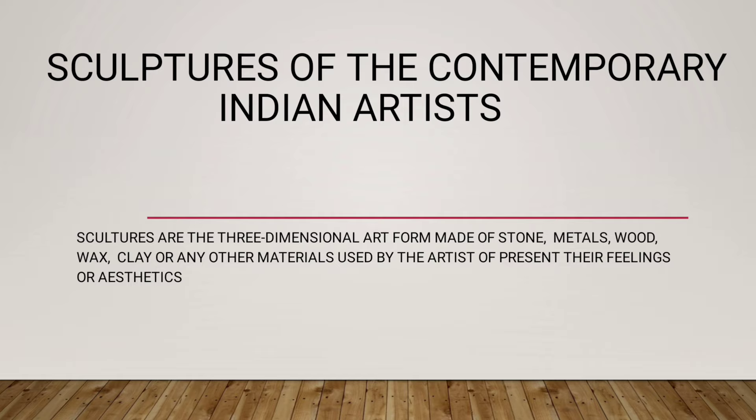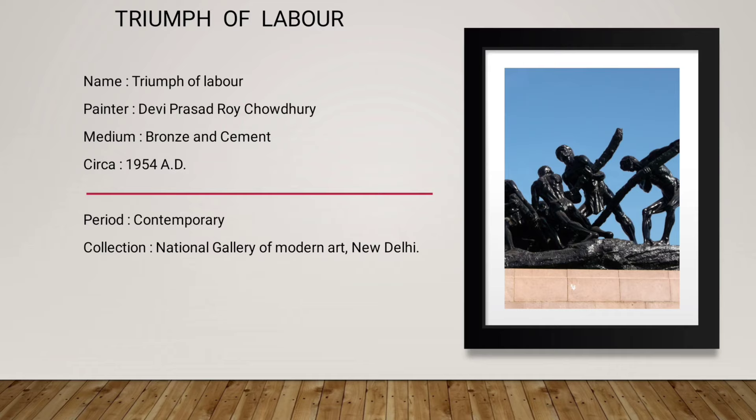In our syllabus, there are 4 sculptures that we have to study. First of all, we have the Triumph of Labour. It is also known as the Victory of Labour. So if we come to our exams, then first of all we have to make this box. The name is Triumph of Labour, and the artist's name is Deviprasad Roy Chaudhuri.